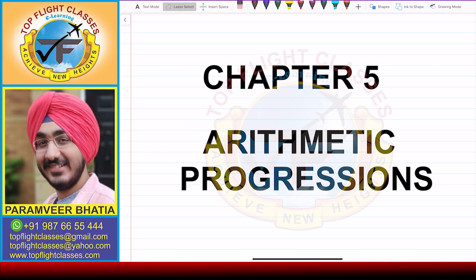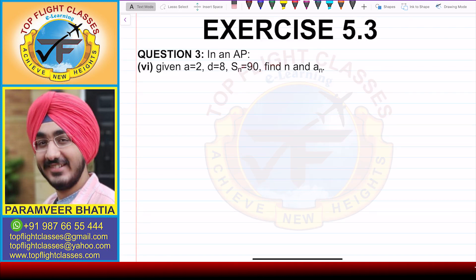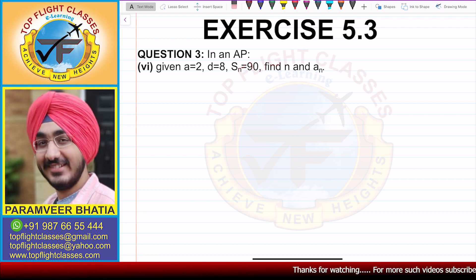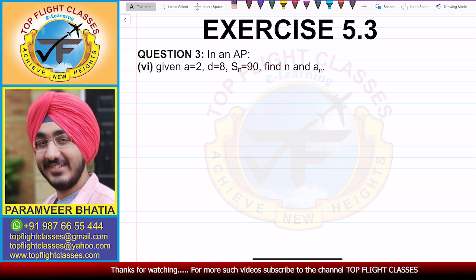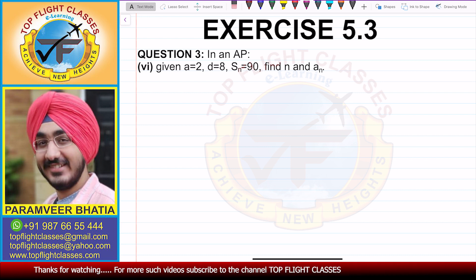Hey guys, welcome to my channel Top Flight Classes. In this video, we are going to solve the sixth part of question number 3 of exercise 5.3. Question number 3 says: in an AP, given A is equal to 2, D is equal to 8, Sn is equal to 90. We have to find N and AN.